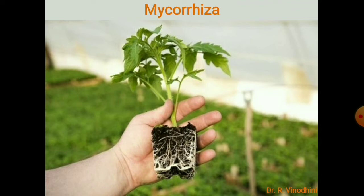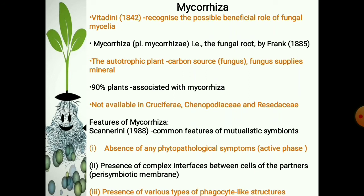Mycorrhizae is a symbiotic association between the green plant and fungus. In 1842, Vitadini was the first to recognize the possible beneficial role of fungal mycelia which mantled the root of the higher plants. In 1885, Frank named this association as mycorrhizae — a symbiotic association between the plant root and fungus with bi-directional nutritional exchange between the partners.